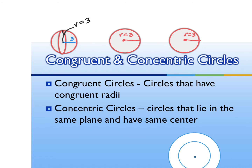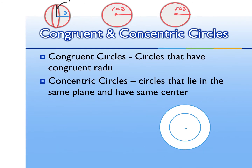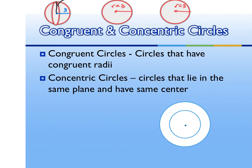For concentric circles, this is like a bullseye. These are circles that lie in the same plane and have the same center. The bullseye in the middle and the rings around it are all concentric circles. These are not going to be congruent circles — they have different radius lengths. It's like a circle within a circle, but they must have the same center.